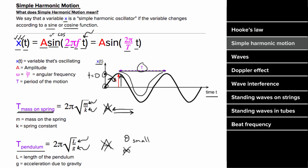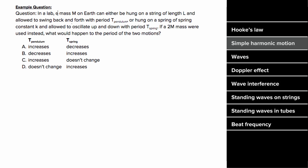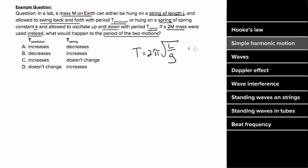What does an example problem involving simple harmonic motion look like? A mass m on Earth can be hung on a string of length L and swing with period T-pendulum, or hung on a spring of spring constant K and oscillate with period T-spring. If a mass of 2m were used instead of m, what would happen to the periods? The period of a pendulum doesn't depend on the mass, so the period of the pendulum would not change. The answer is D.